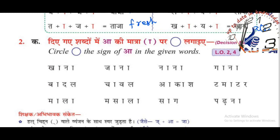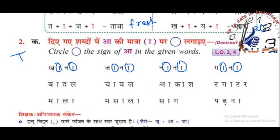In the given words, circle the 'aa' matras. We already know the 'aa' matra is written as slanting and slipping lines. Simply circle the 'aa' matras and try to identify the letters. If you don't know these letters, you can refer to our YouTube channel's bridge courses where we uploaded how to write and read the letters. Thank you — in the next video we are going to learn another exercise of this lesson.